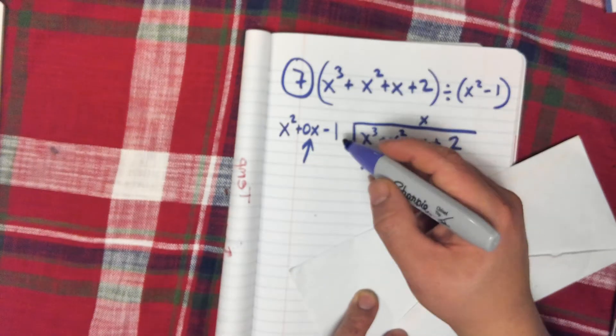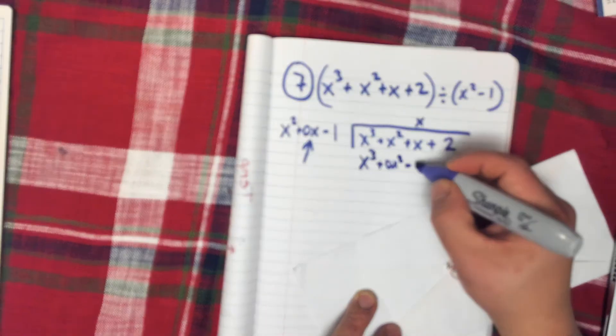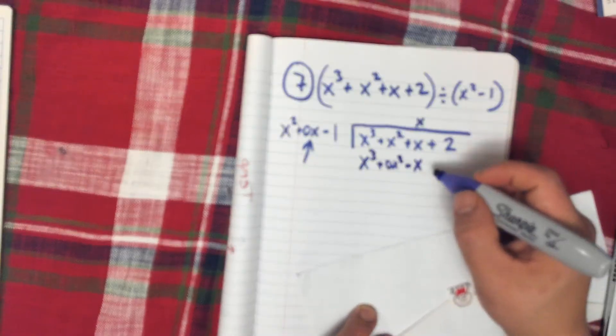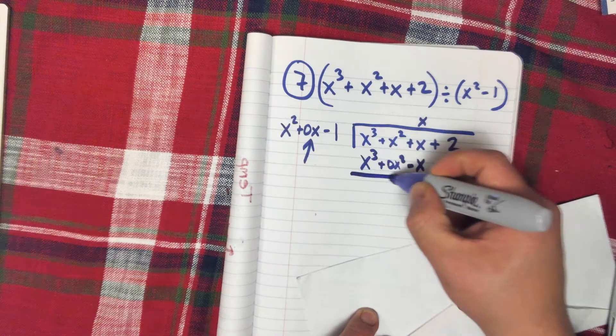x times minus 1 is going to be minus x, and let's subtract.